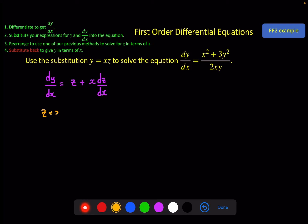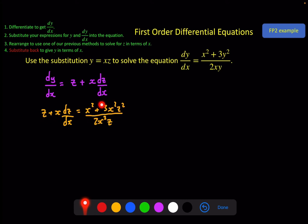That gives us our new equation: z + x·dz/dx equals x² + 3 times y², so that's x²z², divided by 2xy which is 2x·(xz), giving another x and a z. Now take a moment to look at the equation. Because the x squareds cancel here, we have nothing but z's on the right side, and I can move the z across and combine it with the fraction. We're going to have z's on one side and x on the other — I think we can separate the variables.